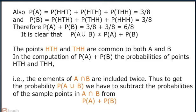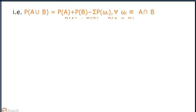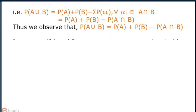Thus, to get the probability of A union B, we have to subtract the probabilities of the sample points in A intersection B from probability of A plus probability of B. That is, probability of A union B equals probability of A plus probability of B minus summation of probability of omega_i for all omega_i belonging to A intersection B. Thus, we observe that probability of A union B equals probability of A plus probability of B minus probability of A intersection B.